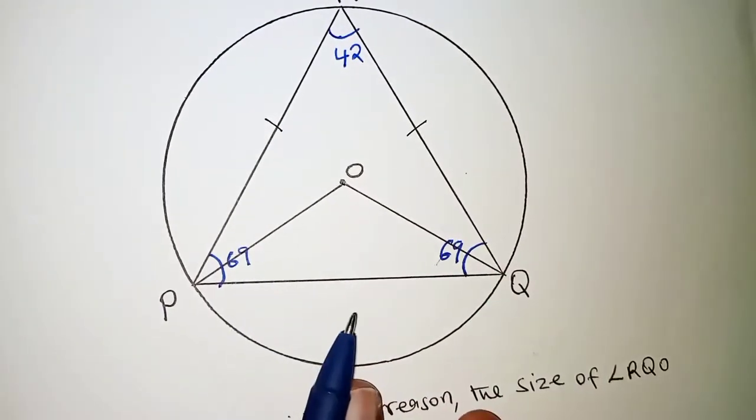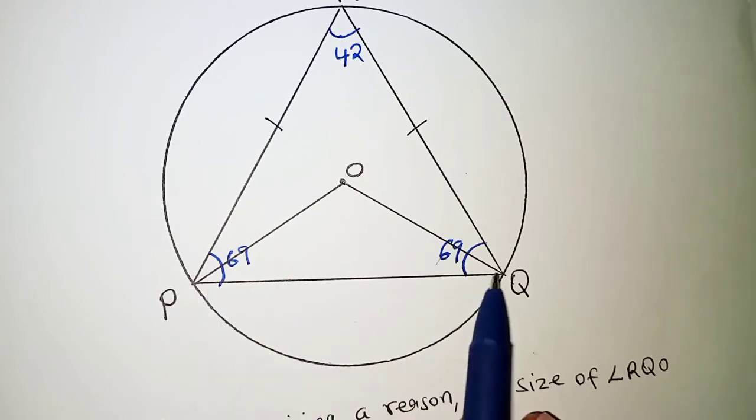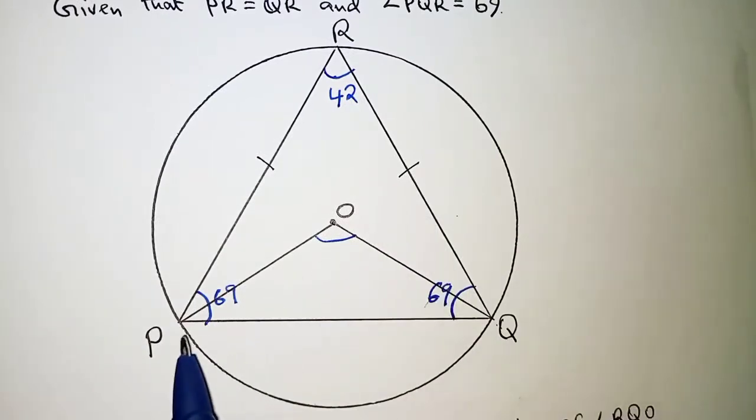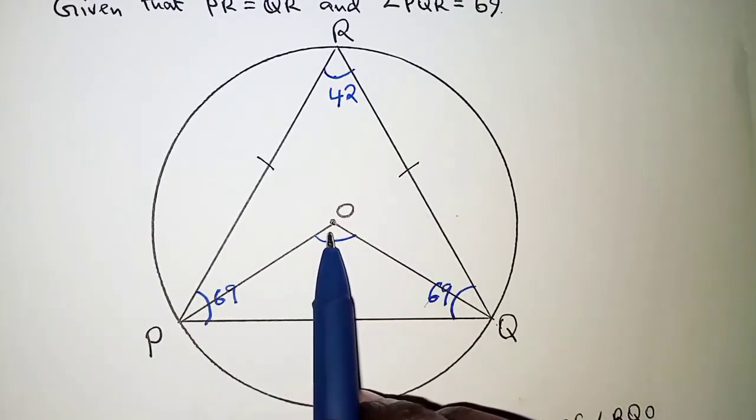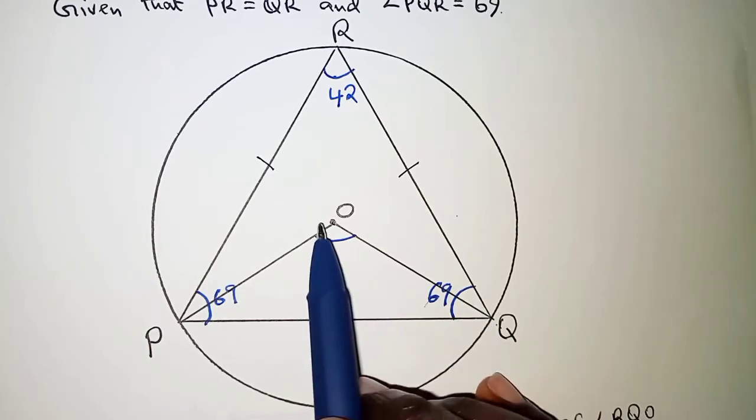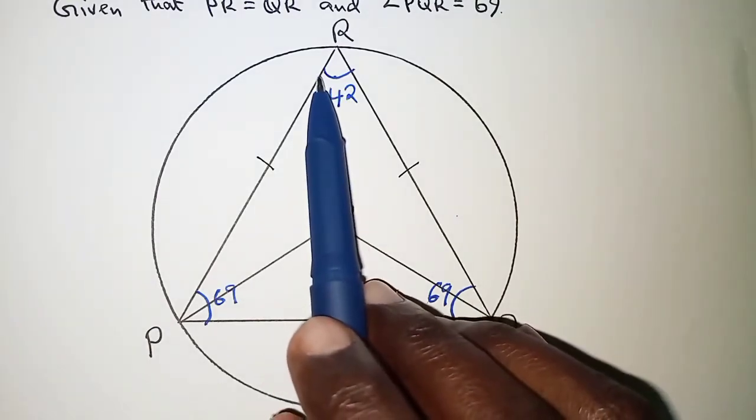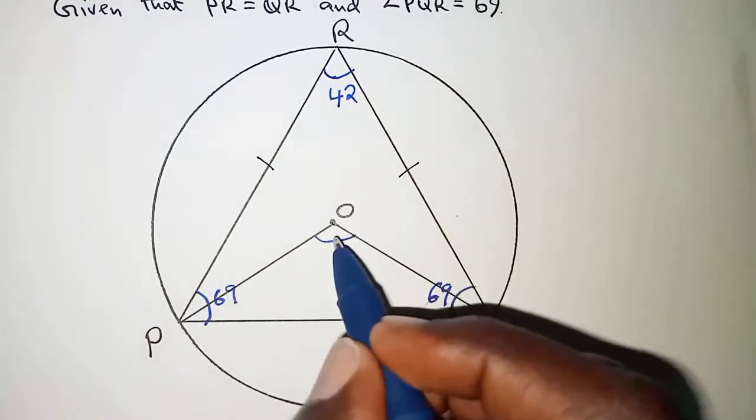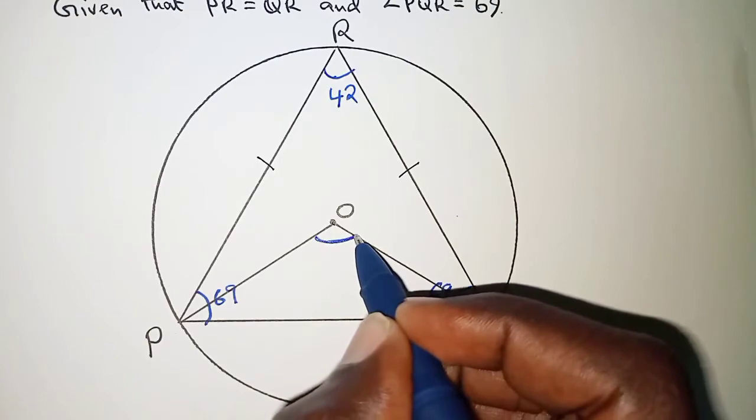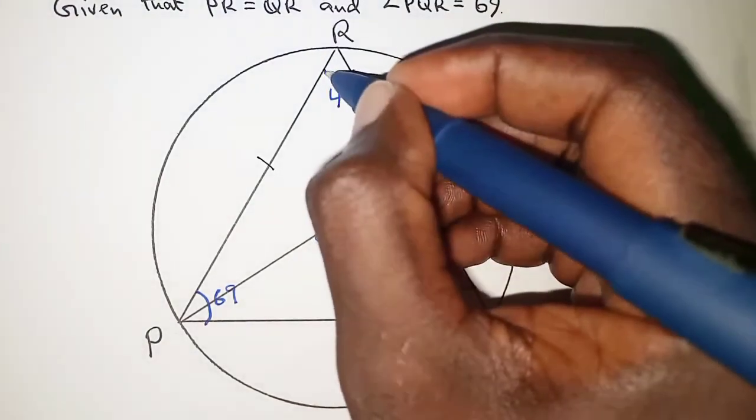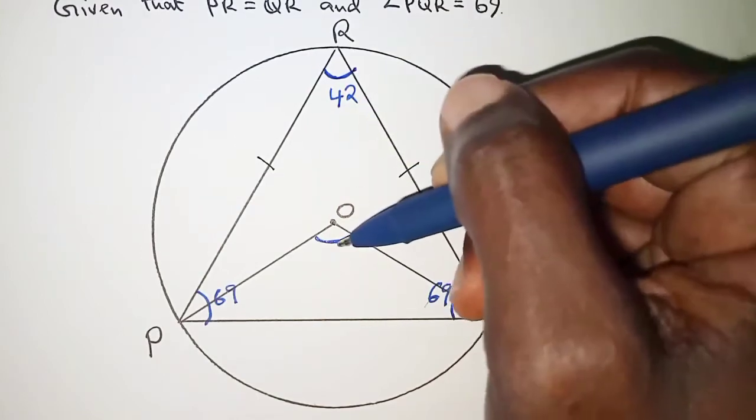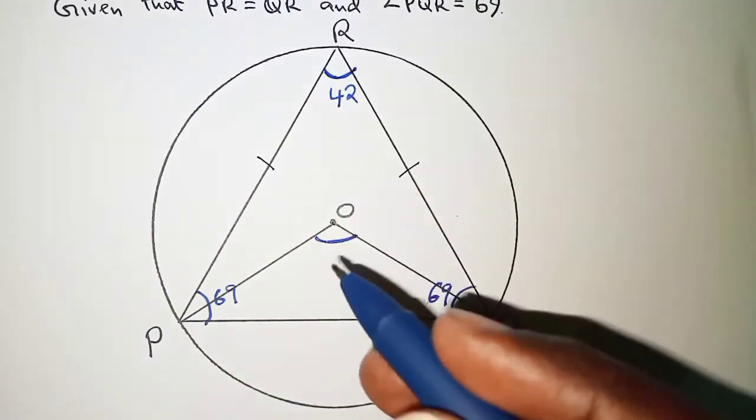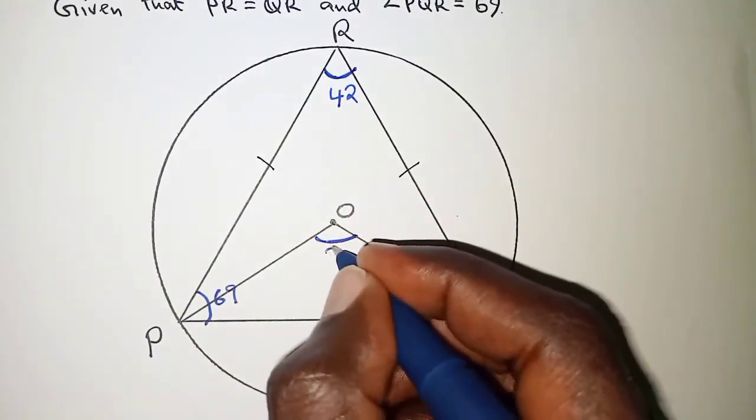Another thing is that we have the chord PQ subtending an angle at the center. We need to recall that the angle subtended at the center by a chord should always be twice the angle subtended at the circumference by the same chord. So if at the circumference we have 42, then at the center we will have 84.